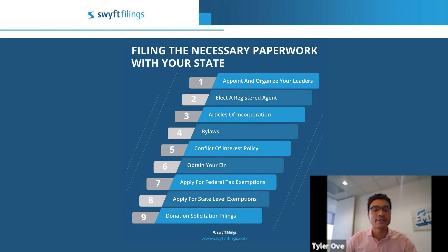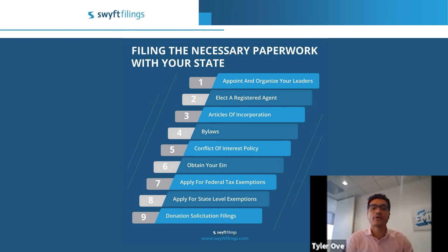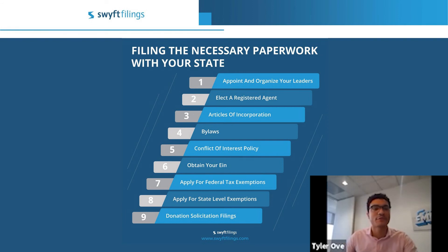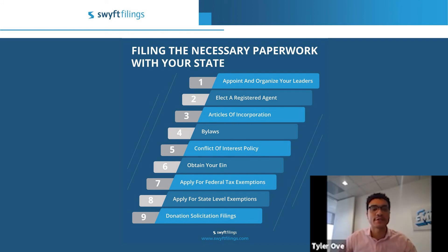Not everything is going to fall under the exempt category. Ultimately, it is going to be items that are used directly for your organization's purpose. For instance, you can't purchase a brand new PlayStation for your home, but if you want to purchase a PlayStation for a raffle to benefit a non-profit that feeds homeless individuals, that would be considered a tax-exempt item.